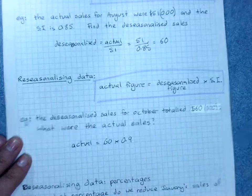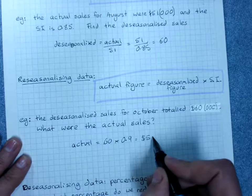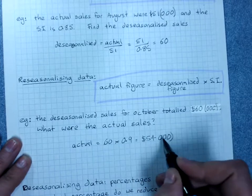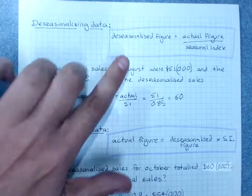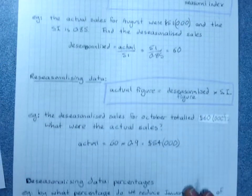So the actual sales were 54,000. And we say that 1,000 is there. So we can use these formulae to de-seasonalize or re-seasonalize data.